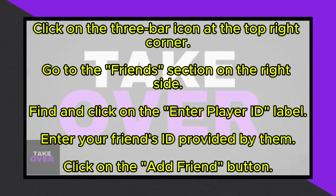Upon entering the ID correctly, the Add Friend button should become clickable, indicated by turning blue. Click on this button to send a friend request. That's all there is to it. Now you know exactly how to add friends on Supercell's Brawl Stars.